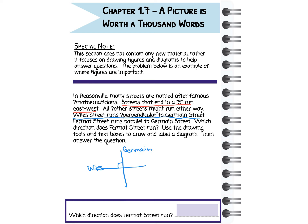Our next bit of information says that Fermat Street runs parallel to Germain. Parallel looks like that, so Fermat Street sits right here in green. Therefore, Fermat Street runs north-south.